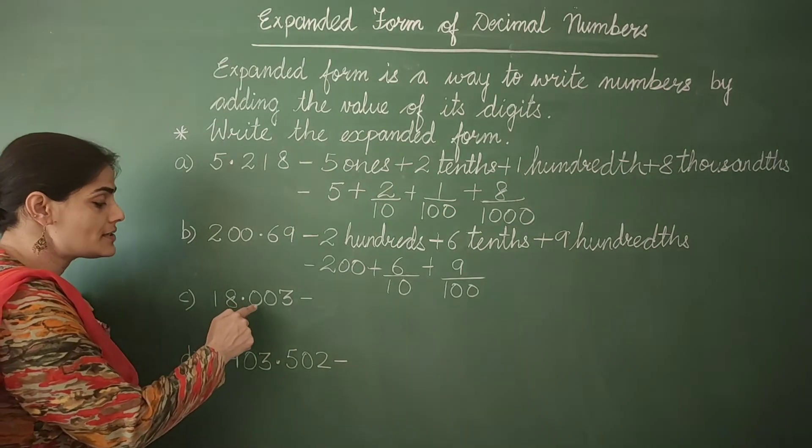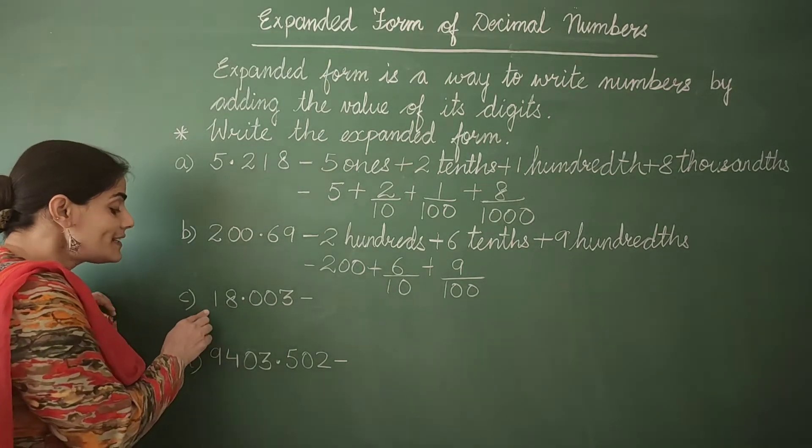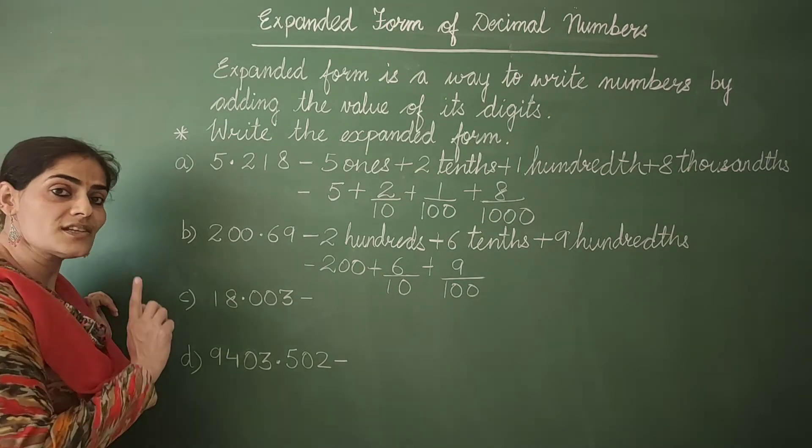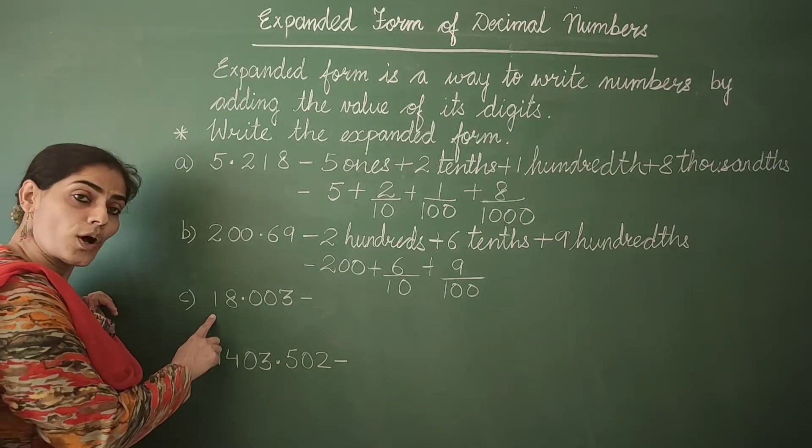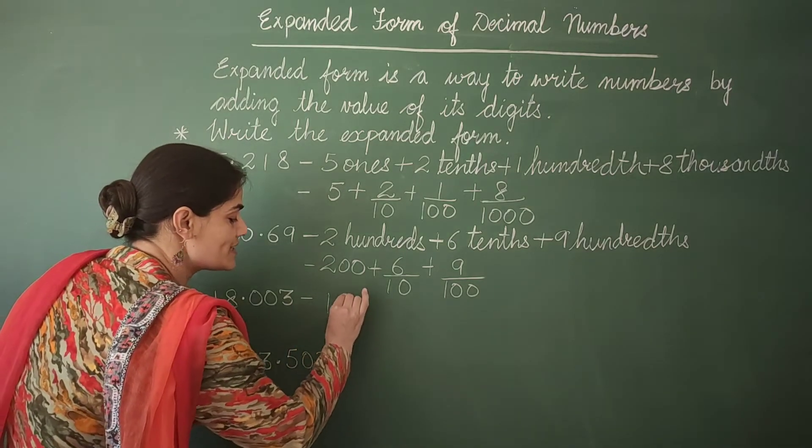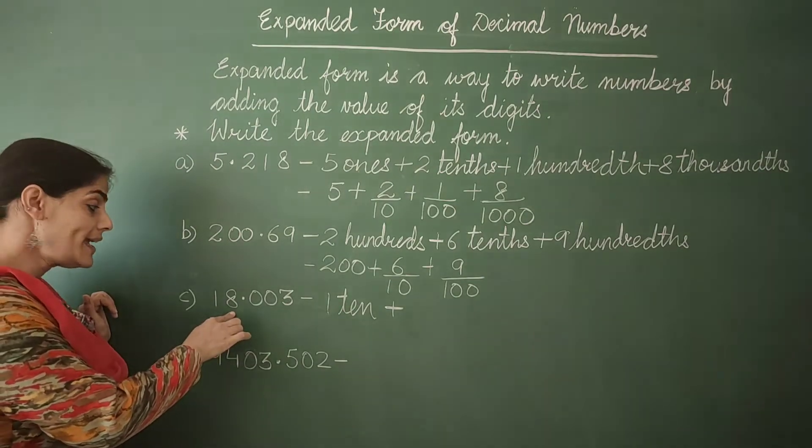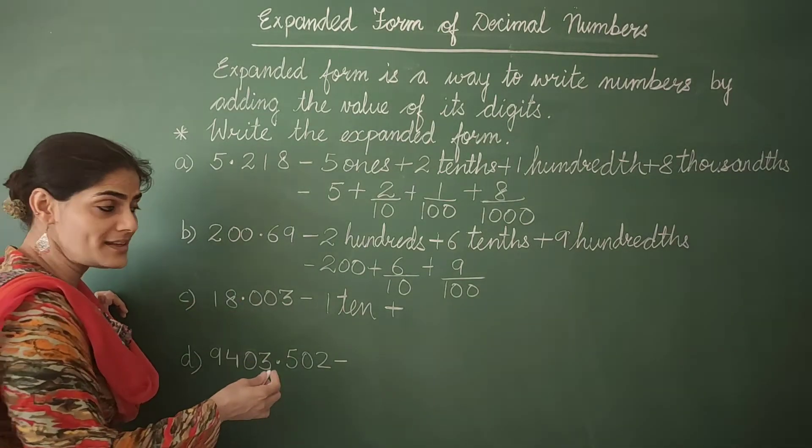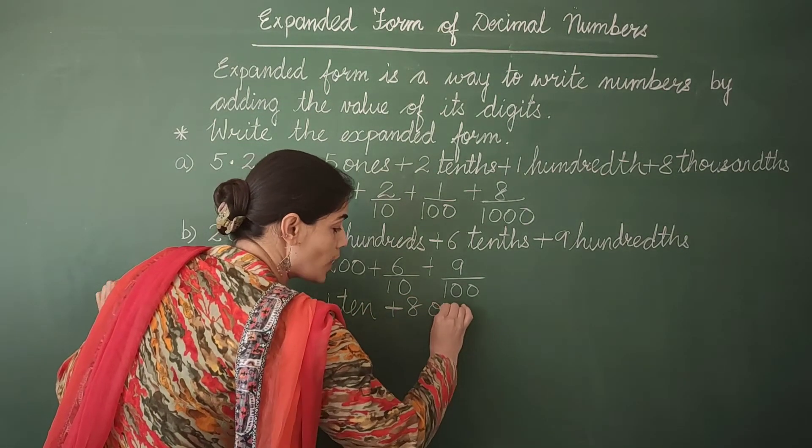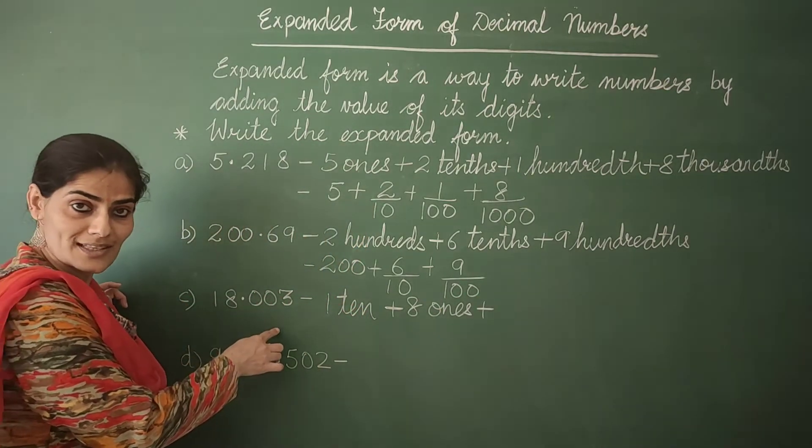It's 18.003. So the digit on the extreme left is 1. 1 is at what place? It is at tens place. So we write here 1 ten plus 8. 8 is at ones place. So 8 ones plus, now we move to the decimal part.